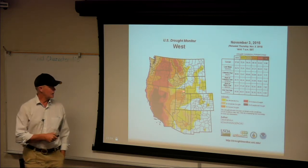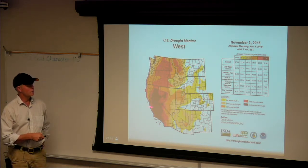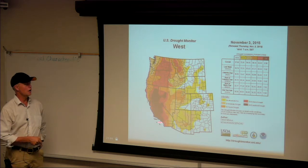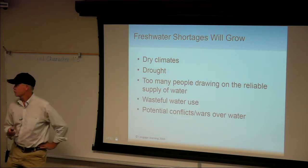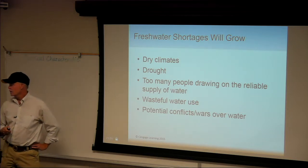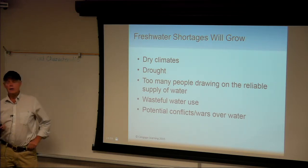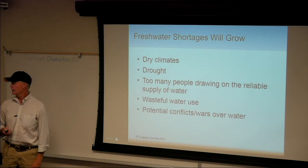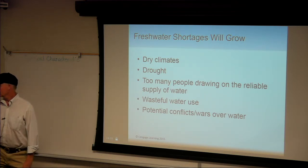The drought monitor — this was in 2015, got a lot worse in 2016, then the northern part of the state broke in 2017. Southern California barely got average rainfall, so we're still technically in this drought. Freshwater shortage will grow because of dry climates, drought, too many people, wasteful water use, and potential water wars. In the Middle East, those conflicts are often around water as well as oil and ethnic tensions — the Tigris and Euphrates flow through countries that have been traditionally at war.